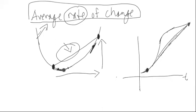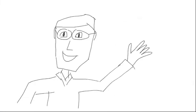So that's what average rate of change is. It's just finding the slope between two points on a curve. Give an example in the next video. Thanks for watching.